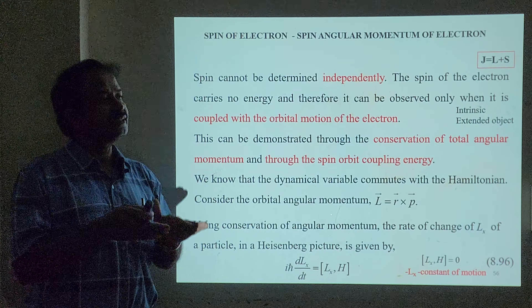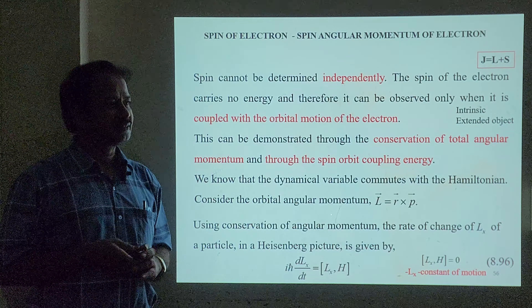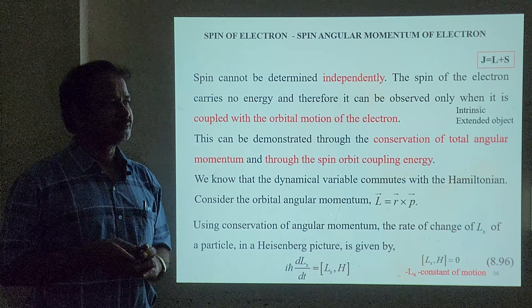In the vector atom model, when an atom is in a magnetic field and the field is switched on, energy levels split. For L = 1, M goes from −L to +L through 0, giving three levels: M = −1, 0, +1. For L = 2, M runs from −2 to +2, giving five levels. This is the space quantization concept we already know.